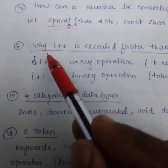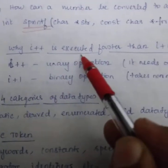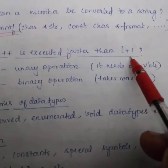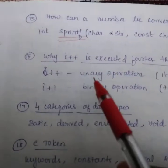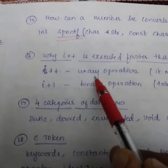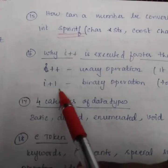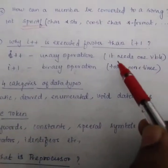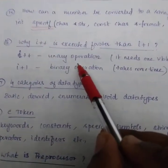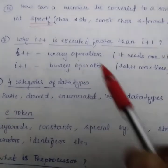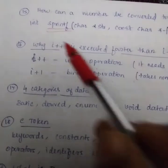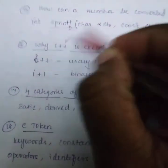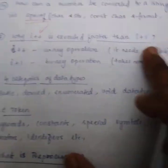Next question, why i++ is executed faster than i+1? It is a very important question. i++ is a unary operation, unary operator. i+1 is binary operation. So it needs one variable, lesser time. In binary operation, it needs more time. That is why i++ will be always executed faster than i+1.